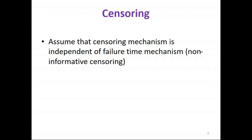An important assumption we make when using standard methods for analysing time-to-event data is that the censoring mechanism is independent of the failure time mechanism — in other words, that the censoring is non-informative. Censoring needs to be unrelated to prognosis, and this is most important if censoring is more likely in one group than another.